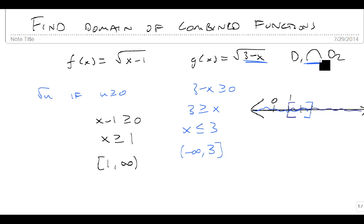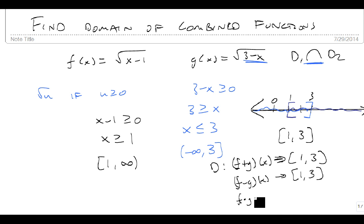And the only place that they're both true is from 1 to 3. So our domain for f plus g of x is [1, 3], the domain. The domain of f minus g of x is likewise—I should have used an arrow, not an equal sign—but that's also [1, 3]. And the domain for f times g of x is also [1, 3].